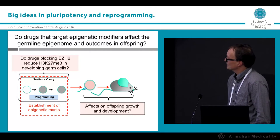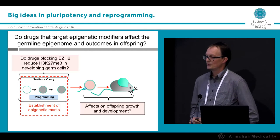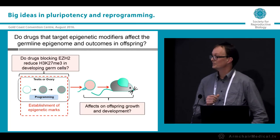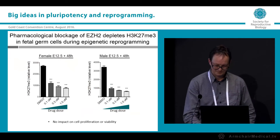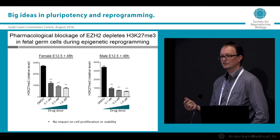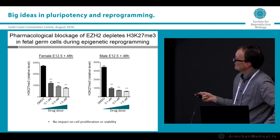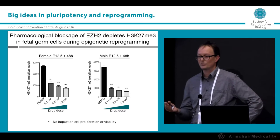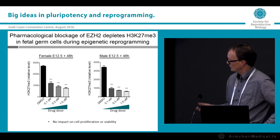The question for us is whether drugs that block EZH2 and prevent H3K27 enrichment might affect the germline in these patients and therefore outcomes in the offspring. The first question we asked was in fetal germ cells — which wouldn't normally be exposed to the drug since you wouldn't be pregnant during treatment — but we can see that these drugs very significantly deplete H3K27 in germ cells in a dose-dependent way.